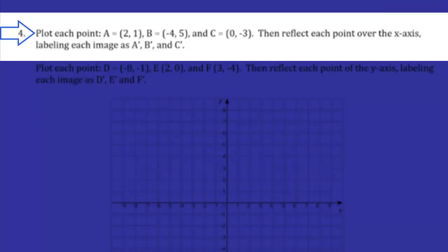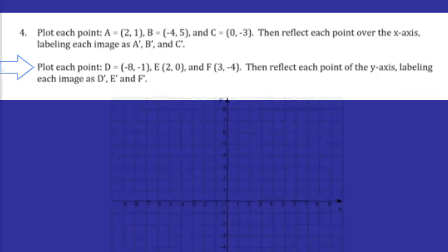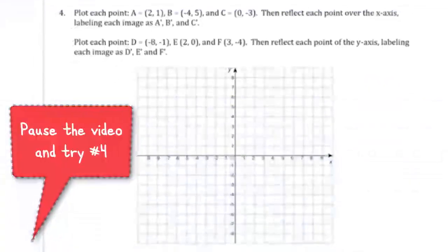Number four. Plot each point A (2, 1), B (−4, 5), and C (0, −3). Then reflect each point over the x-axis, labeling each image as A prime, B prime, and C prime. Also plot point D (−8, −1), E (2, 0), and F (3, −4). Reflect those points over the y-axis and label those images as D prime, E prime, and F prime. Pause the video here and try number four.